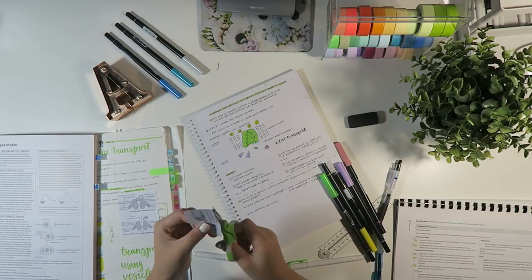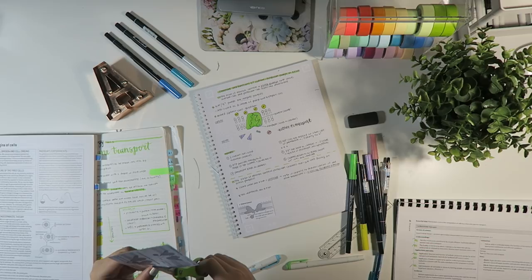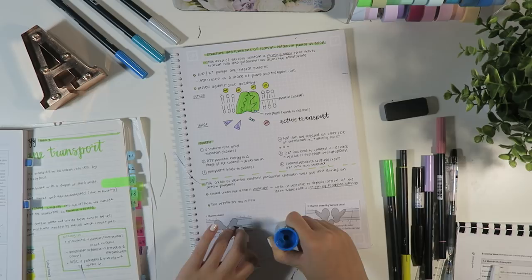So for the most part I like to draw my diagrams myself and that's just because it helps me retain the information better. But if the diagram is a bit too complicated or I just can't be bothered to draw it, then I'll photocopy the page of the textbook and then cut it out and stick it in as I've done at the bottom here.